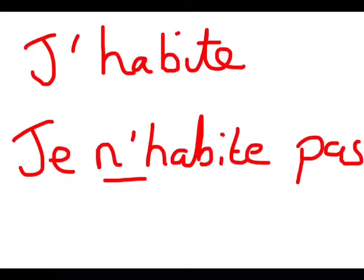Finally, don't forget that H is counted as a vowel in French. Therefore, when we say 'j'habite' — I live — we have to do the same process again. We put our NE and PAS around the verb. However, the E from the NE clashes with the H, therefore we remove it and put an apostrophe in its place, which results in 'je n'habite pas' — I don't live.